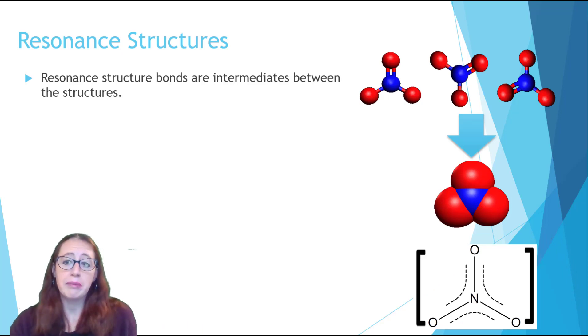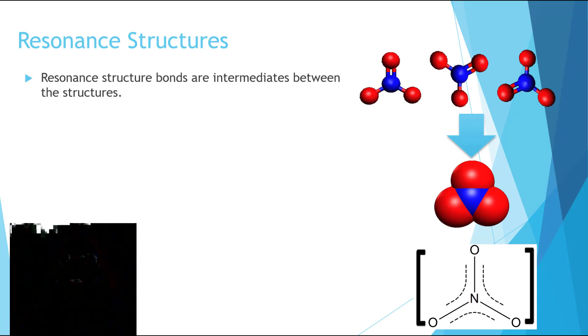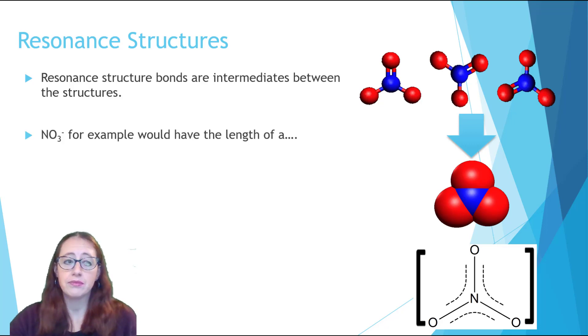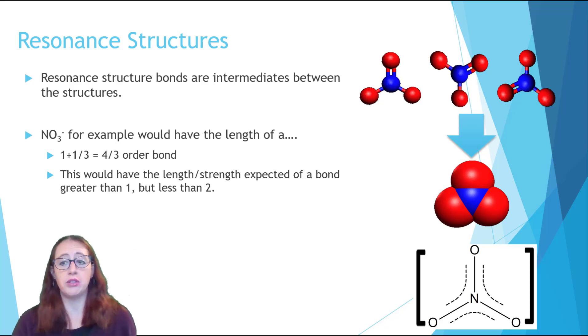In resonance structures, you want to be sure to account for the bond delocalization of that pi bond. For example, in NO3- or nitrate, there's only one pi bond, but it's evenly delocalized across all three bonding pairs. And so each bond winds up having a bond order of four-thirds, one from its single bond, and then a third due to it sharing the pi bond across all three pairs. This would then have the strength or length expected of a bond which is greater than one but less than two.